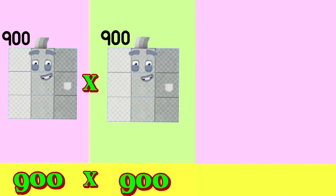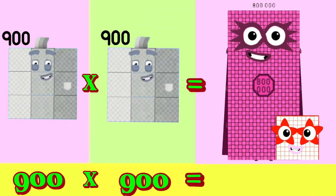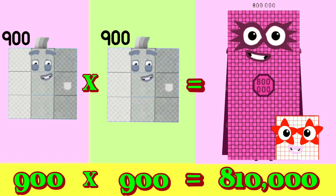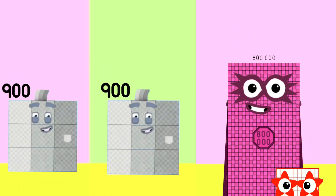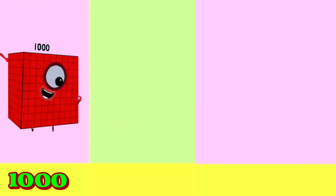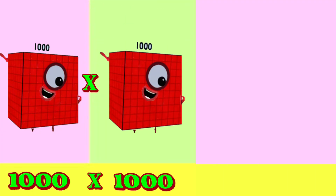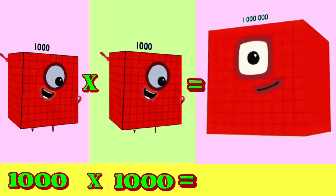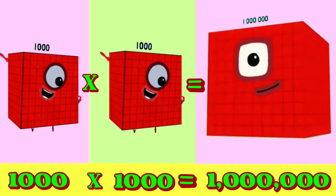900 multiply by 900 is equals to 810,000. 1,000 multiply by 1,000 is equals to 1,000,000.